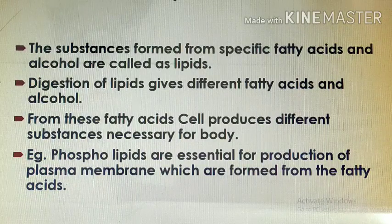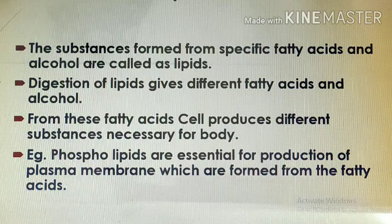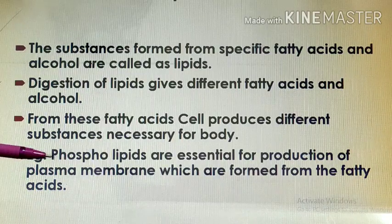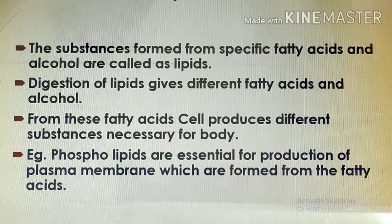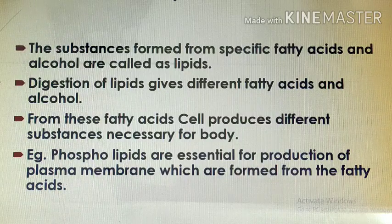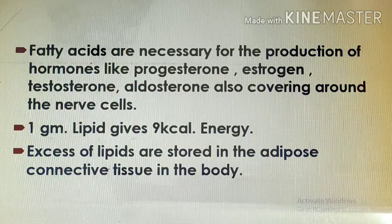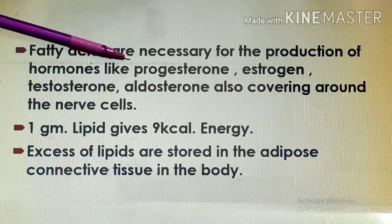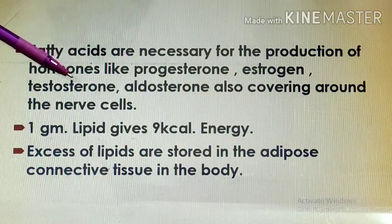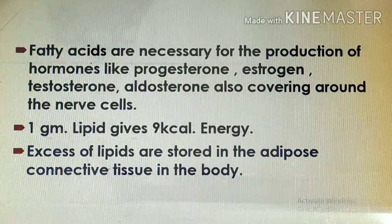From these fatty acids, the cell produces different substances necessary for the body. For example, phospholipids are essential for the production of the plasma membrane, which surrounds each cell. Fatty acids are also necessary for the production of hormones like progesterone, estrogen, testosterone, and aldosterone, as well as the myelin covering around nerve cells in human beings.